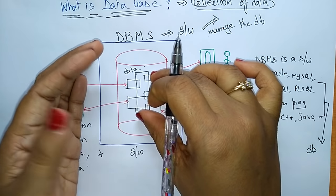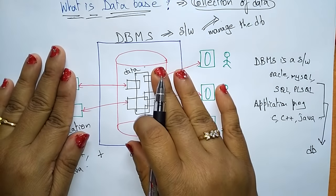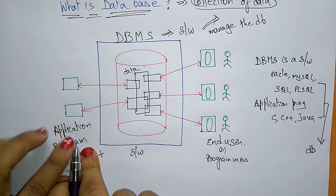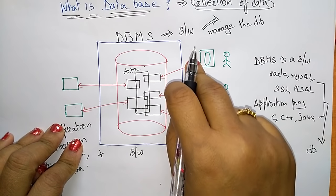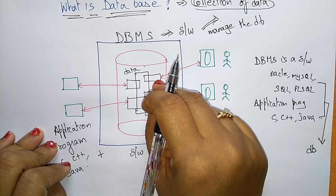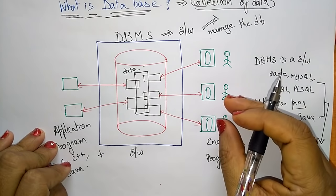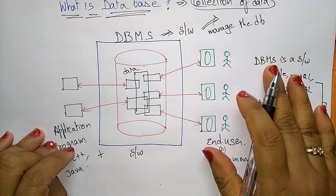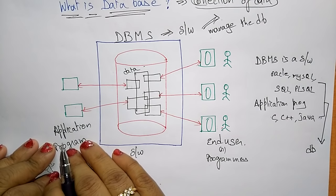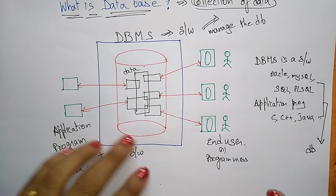With the help of the application program and the software, the data is stored in a particular memory location. The end user can access this data with the help of application programs and the DBMS software. We can retrieve the data, access the data, modify the data, update, delete — whatever operations we want to perform on this data, only with the help of application programs and the DBMS software.